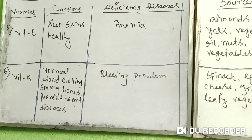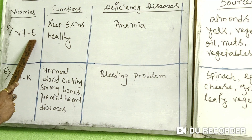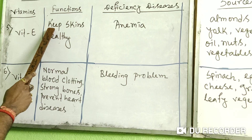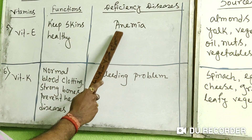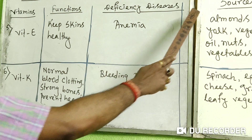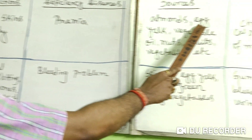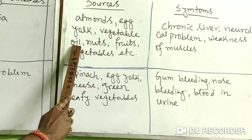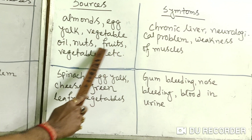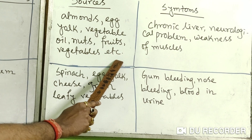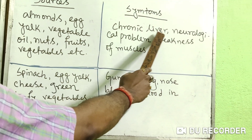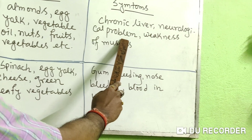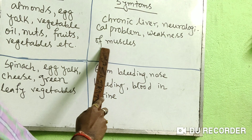The fifth vitamin is Vitamin E. Its function is to keep skin healthy. The deficiency disease is anemia. Sources include almonds, egg yolk, vegetable oil, nuts, fruits, vegetables, etc. Symptoms include chronic liver disease, neurological problems, and weakness of muscles.